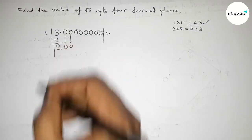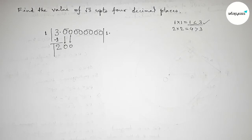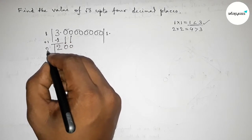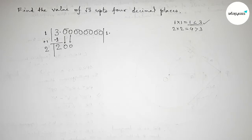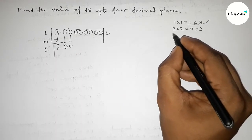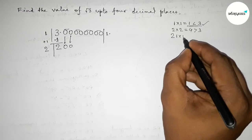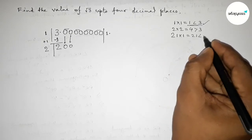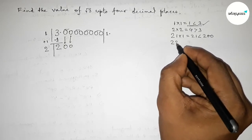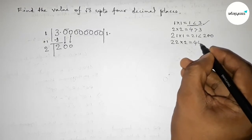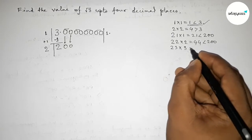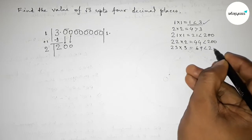Draw a division line. We add 1 with 1 to get 2, then put a digit beside 2 and multiply. If you put 1, that gives 21 × 1 = 21, which is less than 200. If you put 2, then 22 × 2 = 44, which is less than 200. If you put 3, then 23 × 3 = 69, which is less than 200.